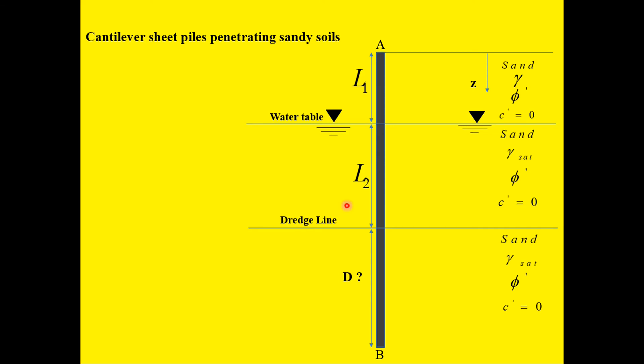Hello guys, welcome back to this channel. Today we'll see how to design cantilever piles penetrating sandy soil. I'll show you step by step: first we'll determine the lateral earth pressure at every depth, then determine the corresponding forces, after that we'll estimate the maximum moment, and finally we'll determine the section modulus. This cantilever pile AB is penetrating a granular sandy soil with a given saturated unit weight, effective friction angle, no cohesion, and a depth of penetration D'.